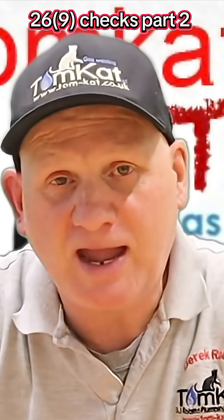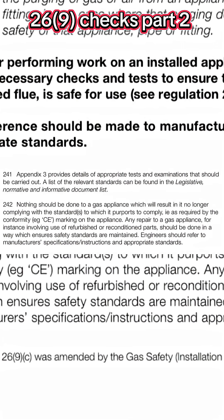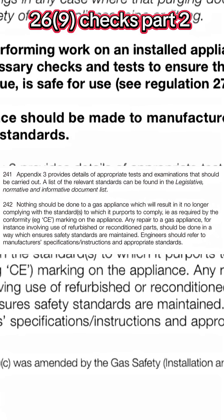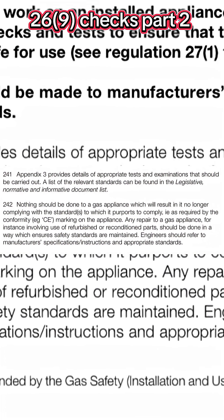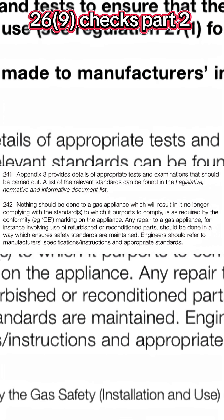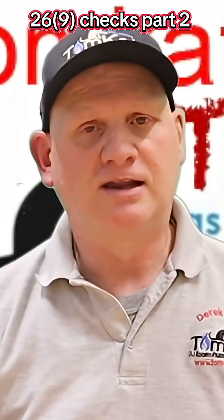To me this is very vague information, and engineers can pretty much interpret it however they want. But if you read a little bit further down the page, it points us to Appendix 3. So 241 says Appendix 3 provides details of the appropriate tests and examinations that should be carried out. It then goes on to say a list of relevant standards can be found in the legislative, normative, and informative document list. Let's take a look at Appendix 3 and see if this makes it clearer on the tests we need to carry out when doing our 26.9 checks.